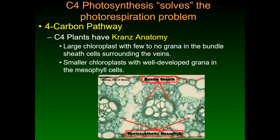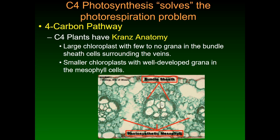C4 plants have something called Krantz anatomy — basically a wreath shape. This wreath shape has bundle sheath cells surrounding the vascular bundle, which transmits water and nutrients through the leaf via xylem and phloem. These cells have actually specialized to split the two halves of photosynthesis — the light reactions and the Calvin cycle — into different cells. We've got large chloroplasts with few to no grana in the bundle sheath cells, and smaller chloroplasts with very well-developed grana in the mesophyll cells.